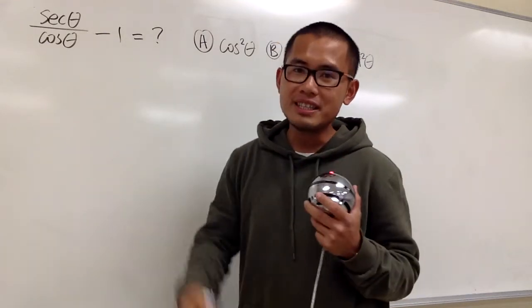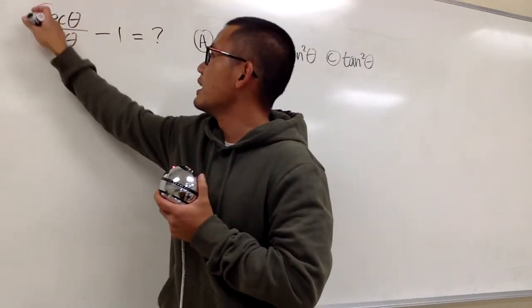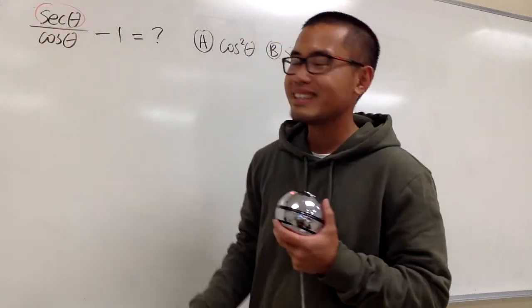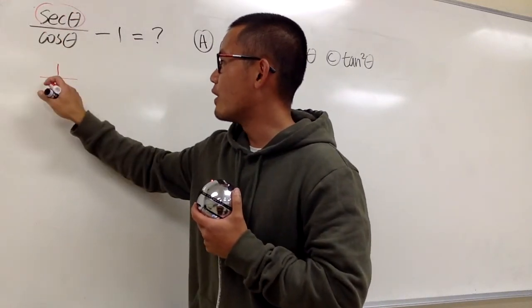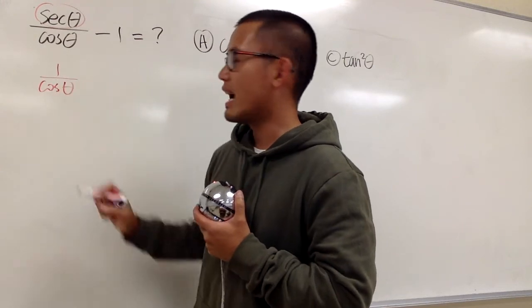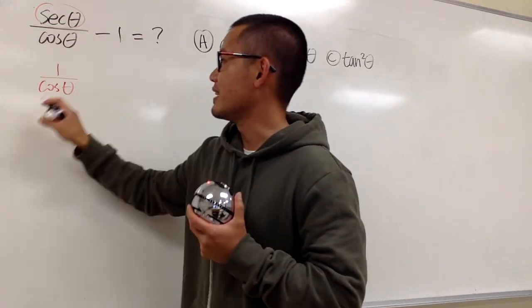Well, we have secant theta, so let's write the secant theta in terms of sine or cosine. This is the same as 1 over cosine theta. That's all for secant theta.